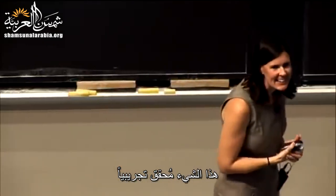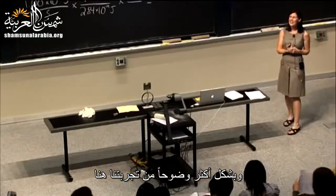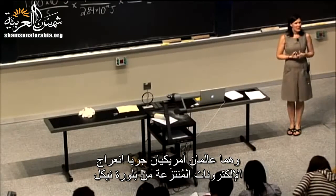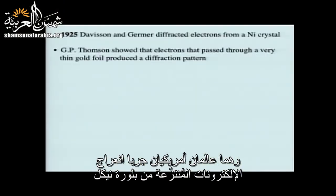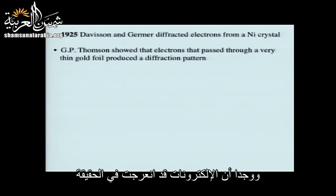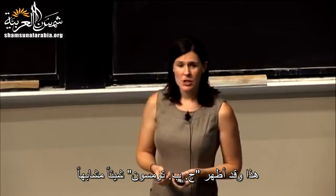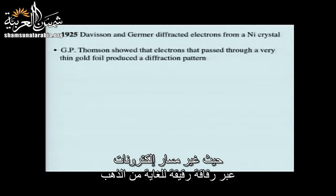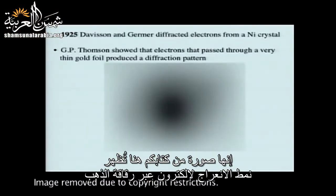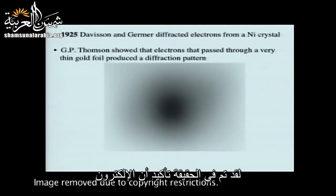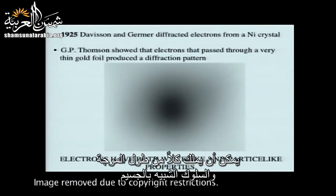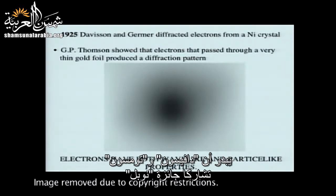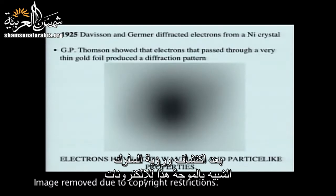This was experimentally validated: Davisson and Germer at Bell Laboratories diffracted electrons from a nickel crystal and confirmed the electrons did diffract. J.P. Thompson also showed this by diffracting electrons through a very thin gold foil, producing a diffraction pattern confirming that electrons show both wave-length and particle-like behavior. Davisson and Thompson shared a Nobel Prize for this discovery.